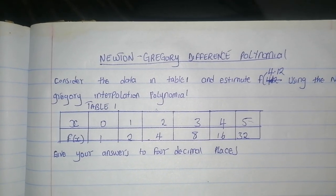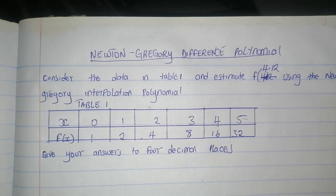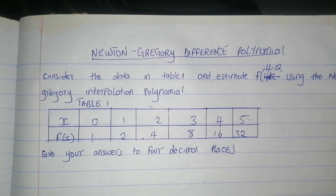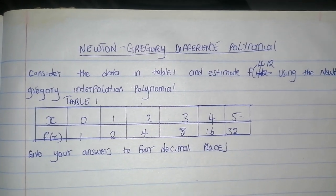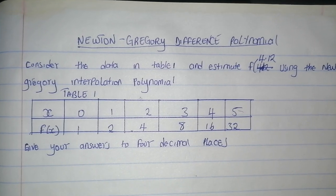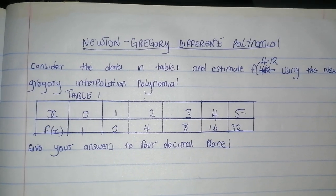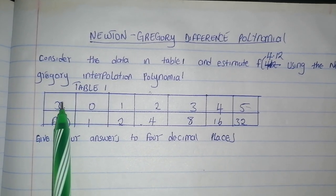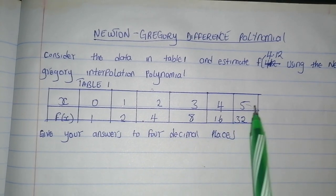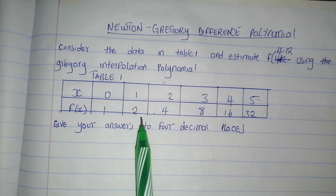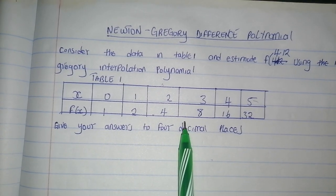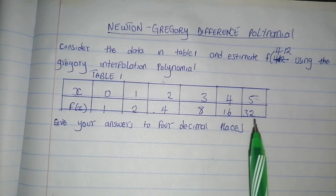I will use the example below. Consider the data in table 1 and estimate f(4.1) using the Newton-Gregory interpolation polynomial. This is the table you have been given: x equals 0, 1, 2, 3, 4, and 5, and the values of f(x) are 1, 2, 4, 8, 16, and 32.